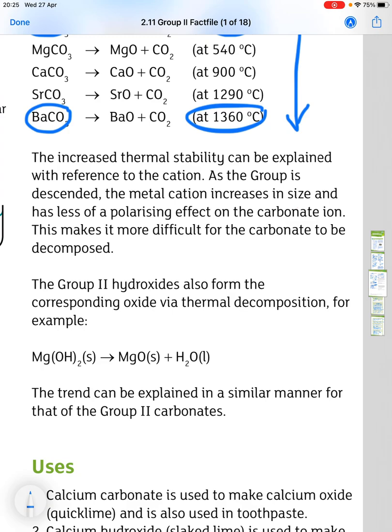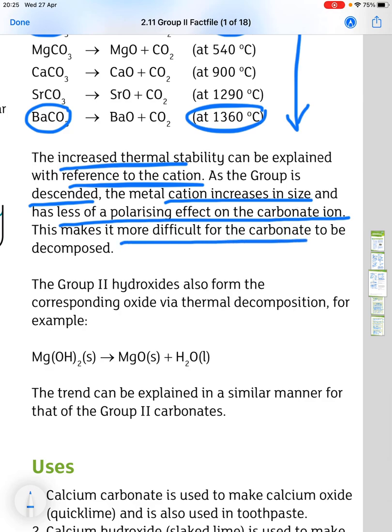So, the increased thermal stability can be explained with reference to the cation. So, as the group is descended, the cation increases in size and has less of a polarizing effect on the carbonate ion. This makes it more difficult for the carbonate to be decomposed.